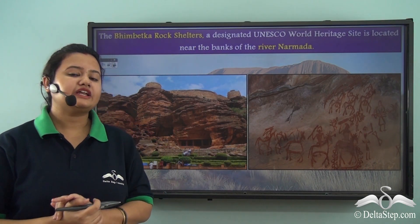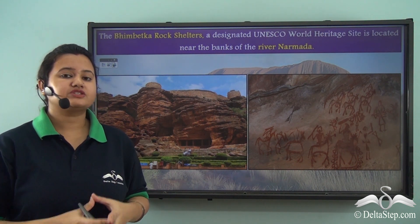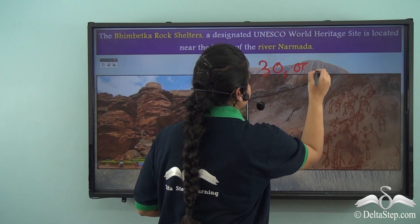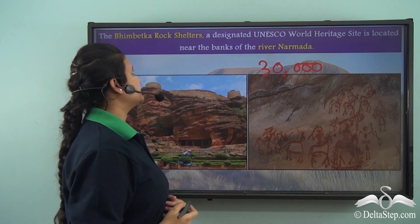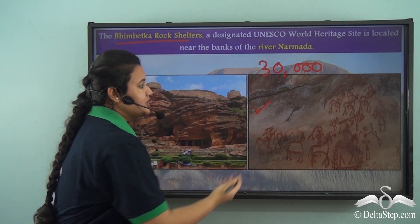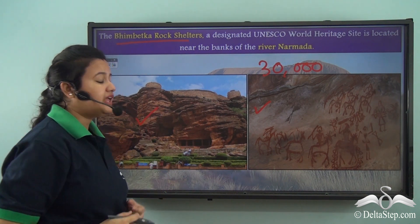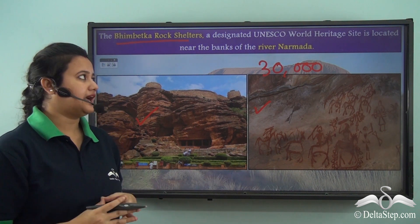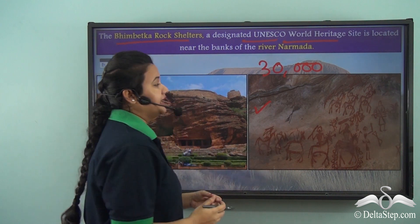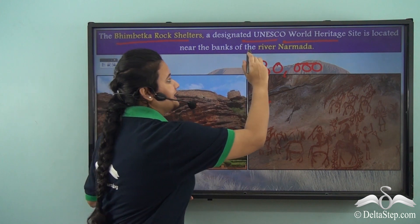An interesting fact: some of the oldest cave paintings, about 30,000 years old, are found in the Bhimbetka rock shelters — painted on the walls of Bhimbetka cave. Bhimbetka cave has been designated as a World Heritage Site by UNESCO, and this remarkable site is located near the banks of the Narmada River.